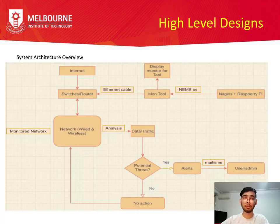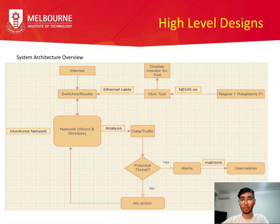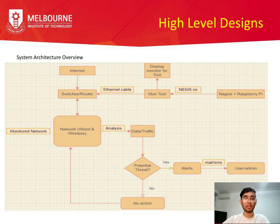For the high-level system architecture, we start with Nagios and a Raspberry Pi. The Raspberry Pi runs a monitoring OS that forms the monitoring tool, connected to a display. The tool connects to a router via Ethernet cable, which connects to the internet and in turn to the monitored network covering both wired and wireless devices. Data is continuously analyzed — if a captured packet is identified as a potential threat, alerts are sent via email or SMS to the user, admin, or network operator.